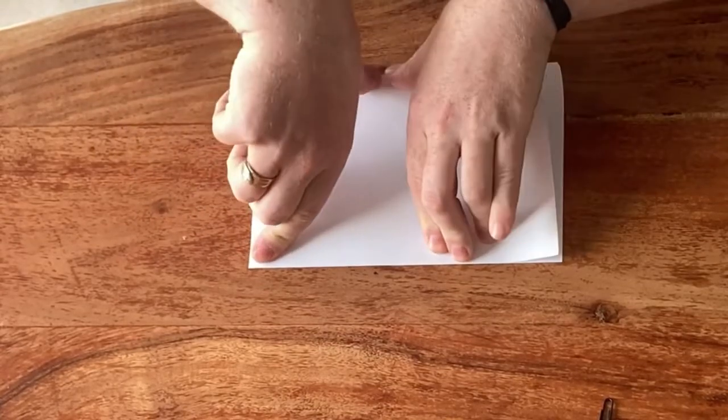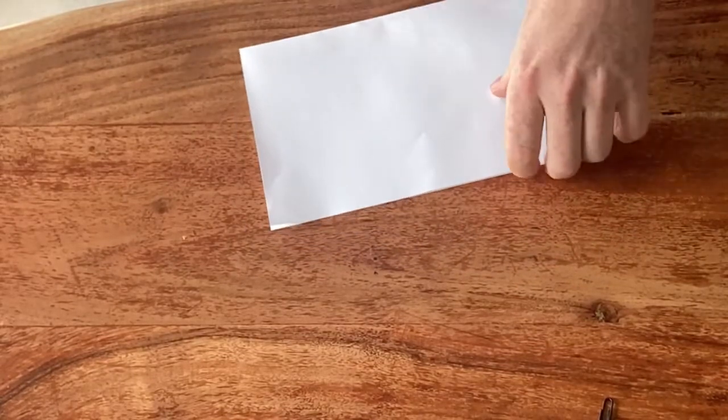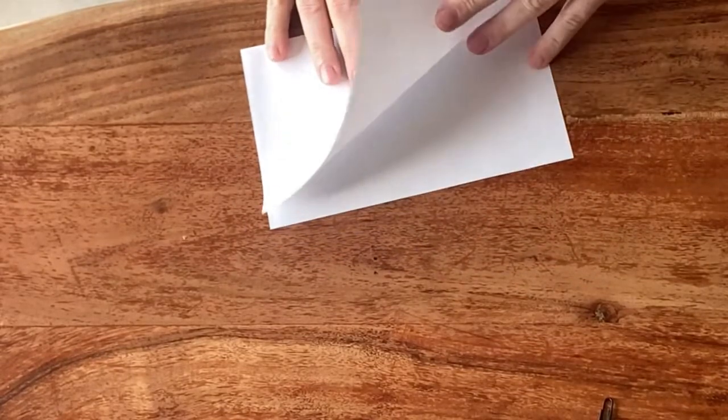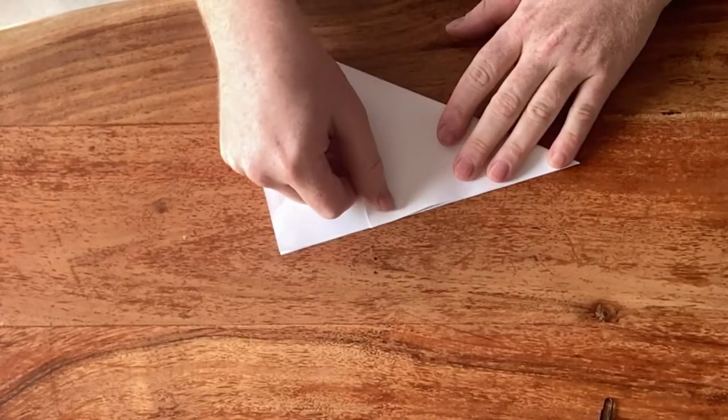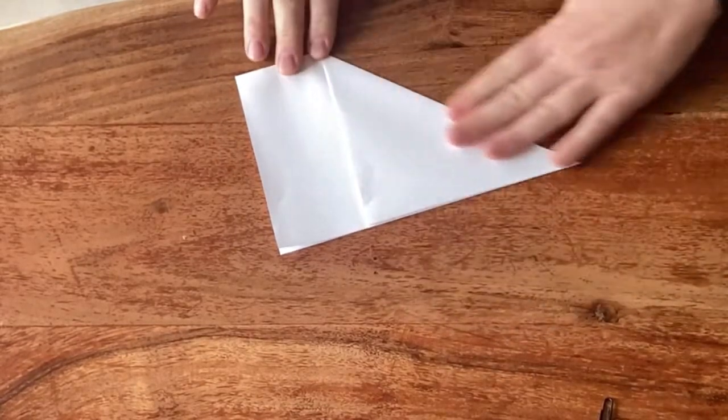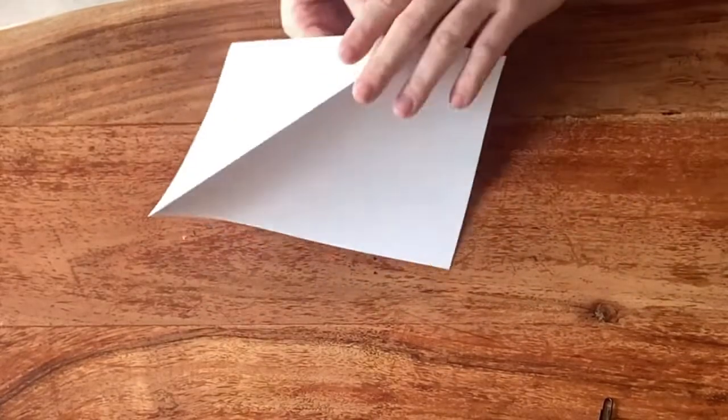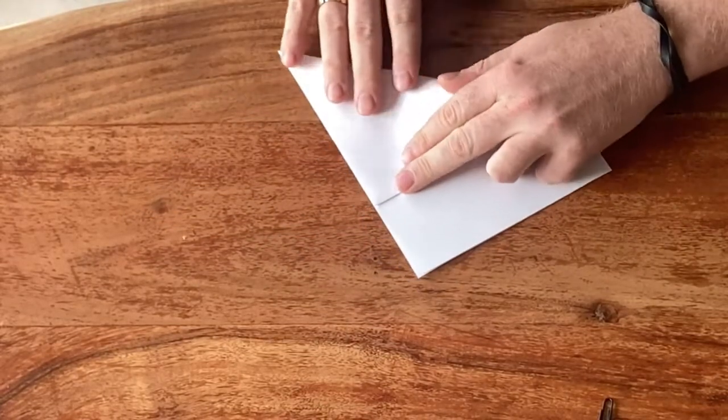Then we will fold the closed corner towards the open side like this. And try to be as precise as possible. I'm just going to inverse this crease—you don't have to, but it makes it a bit easier.